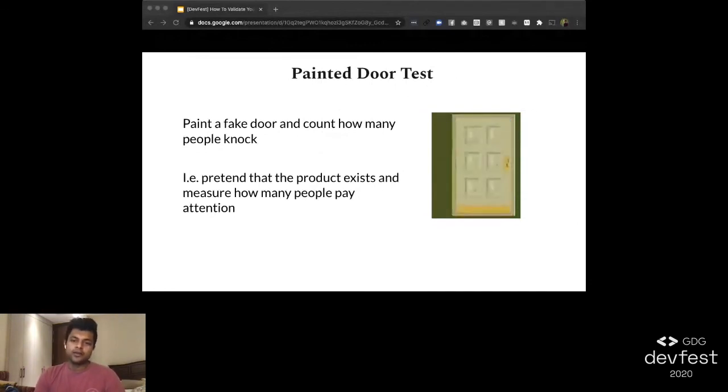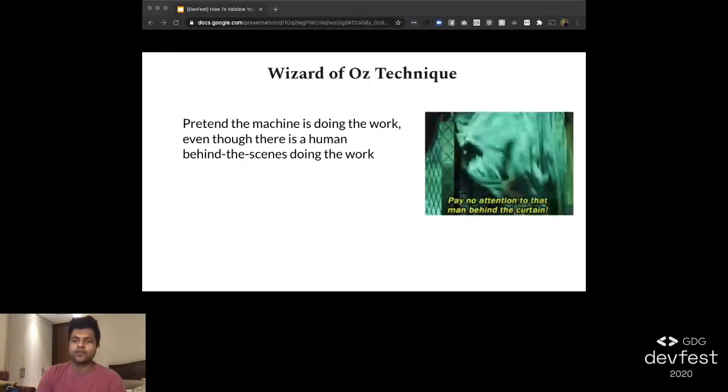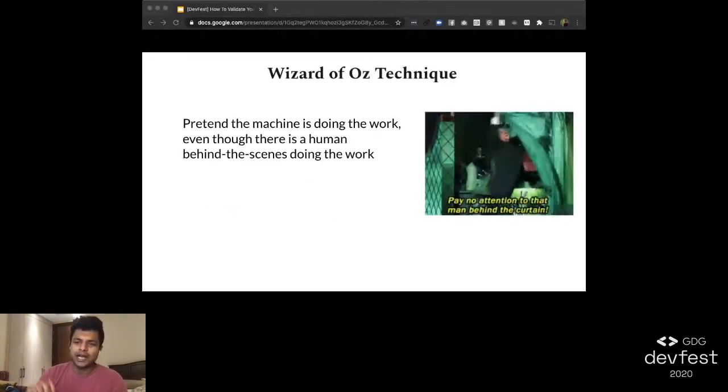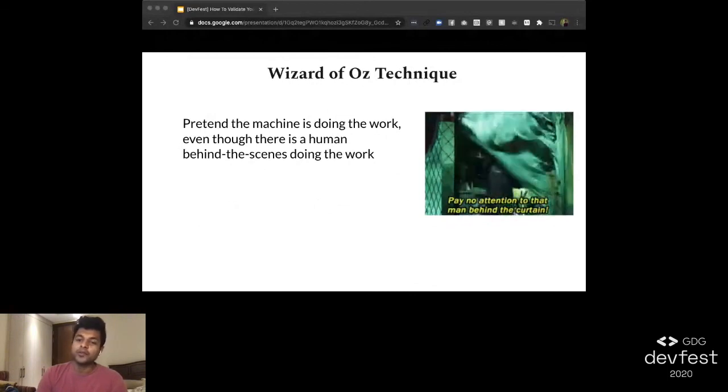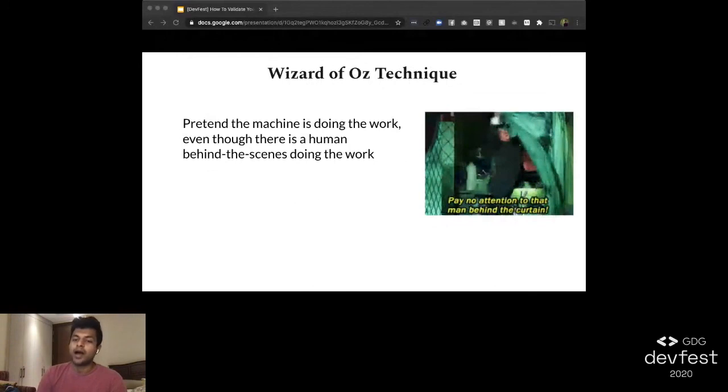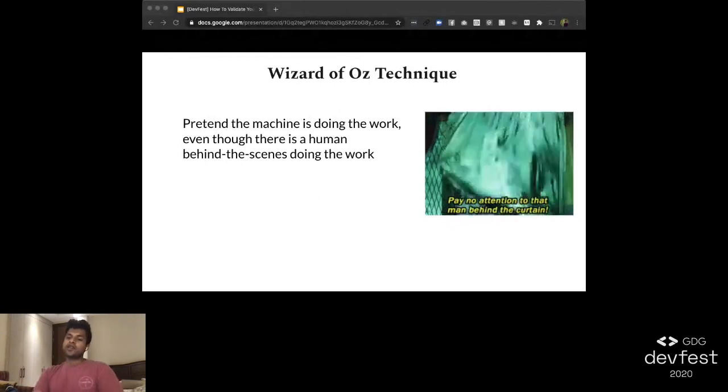But there's still one thing that still needs to be tested, which is that with the painted door test, we've proven that people will come in, they're interested, and they'll submit their email addresses. But our business model depends on the fact that people become recurring customers, which means that month after month, they come back and pay more money. How do we test that part of the hypothesis? For this, we can use another technique called the Wizard of Oz technique.